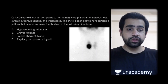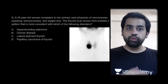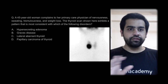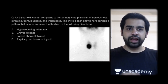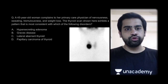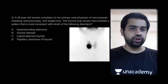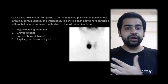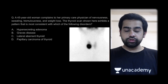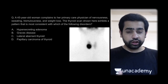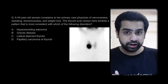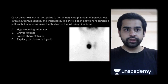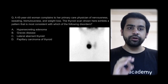The last question: a 45-year-old woman presents to her primary care physician with nervousness, sweating, tremors, and weight loss. A thyroid scan has been performed. What is the diagnosis — a hypersecreating adenoma, Graves disease, lateral aberrant thyroid, or papillary carcinoma of thyroid? The most common cause of hyperthyroidism is Graves disease, but look at the scan carefully. The correct answer here is hypersecreating adenoma.